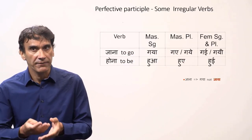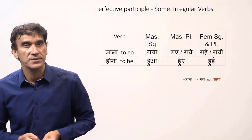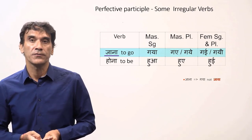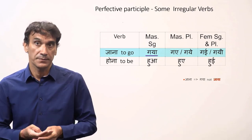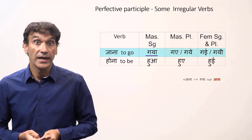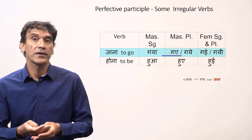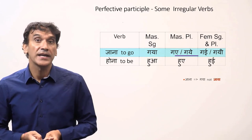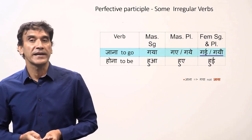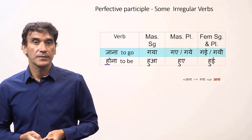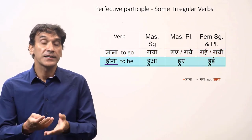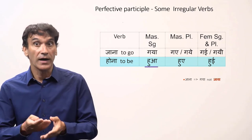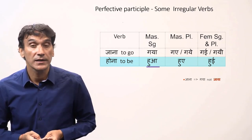Here are two more very common verbs with irregular forms. Jana, to go — the forms are gaya for masculine singular, gaye or gaye for masculine plural, and gai or gai for feminine singular and plural. And finally, the verb hona, to be — hua for masculine singular, huye for masculine plural, and hui for feminine singular and plural.